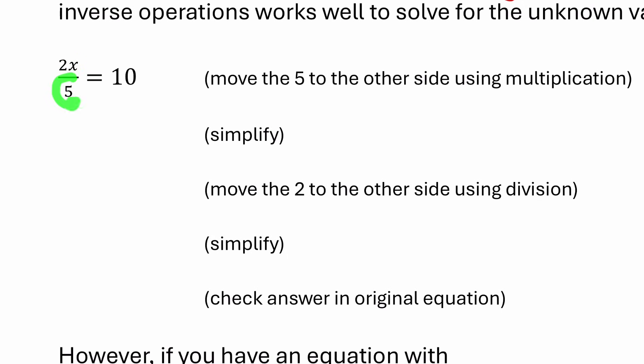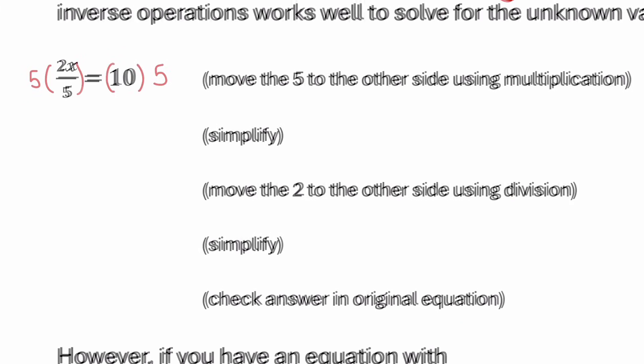If I want to move this 5 to the other side of the equation using inverse operations, what's the opposite of dividing by 5? That would be multiplying by 5. So what I can do is multiply both sides of the equation by 5.